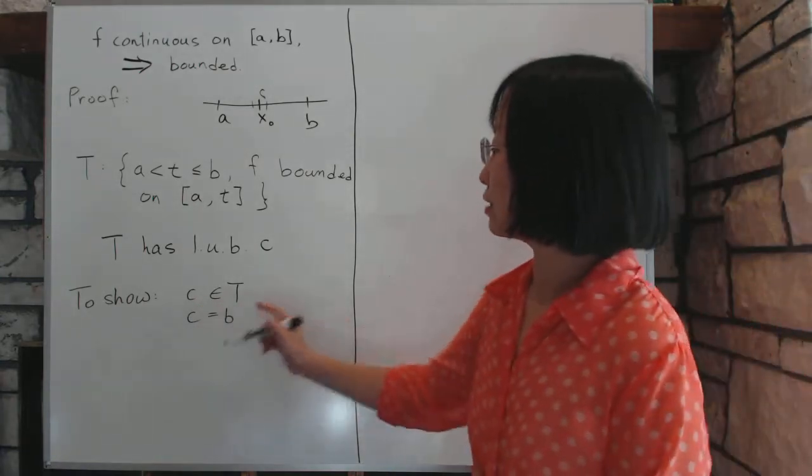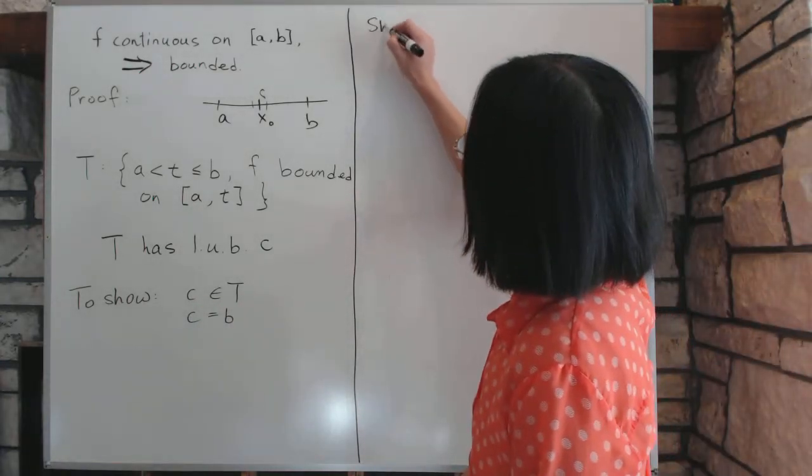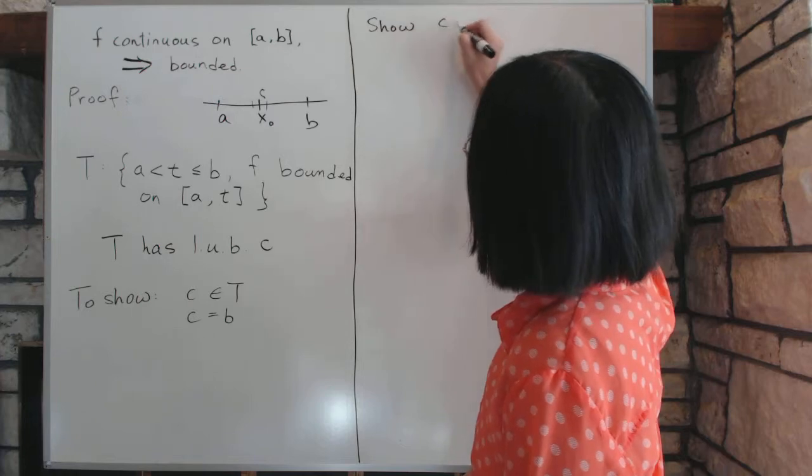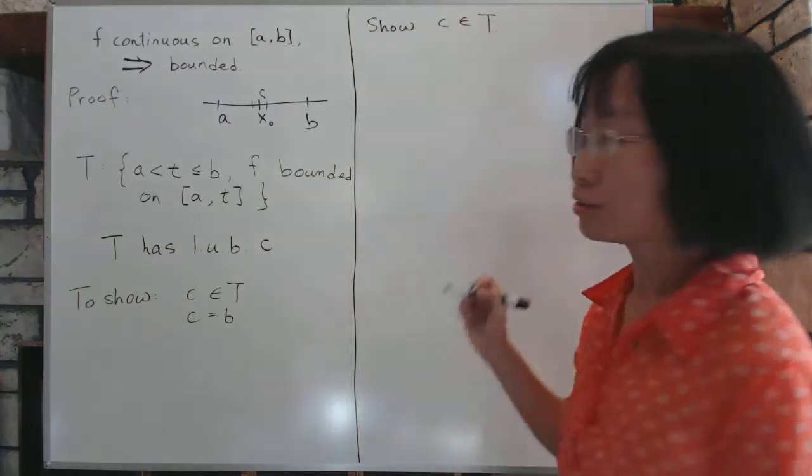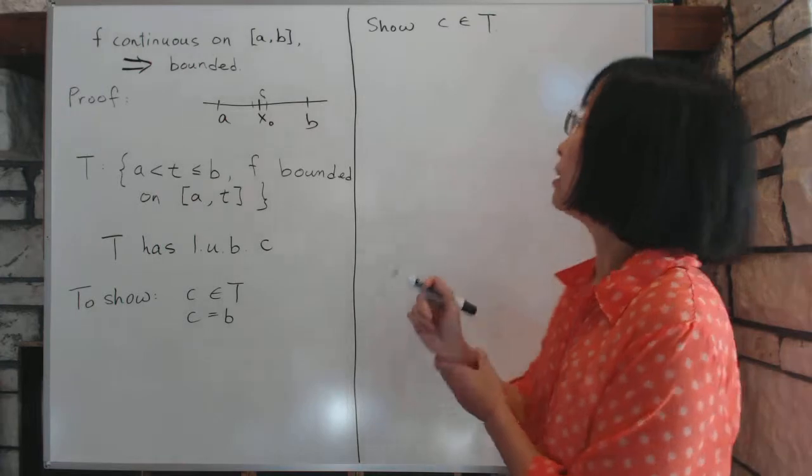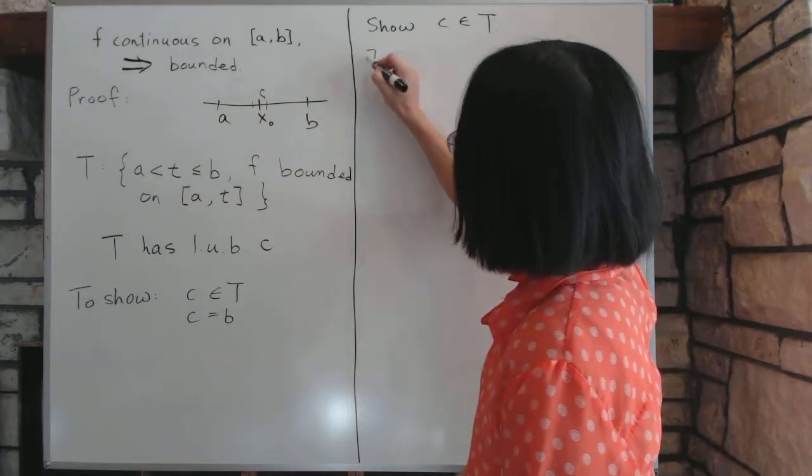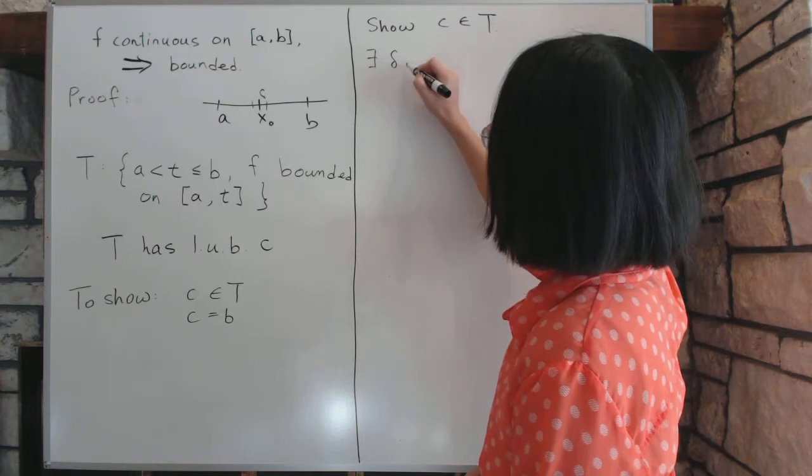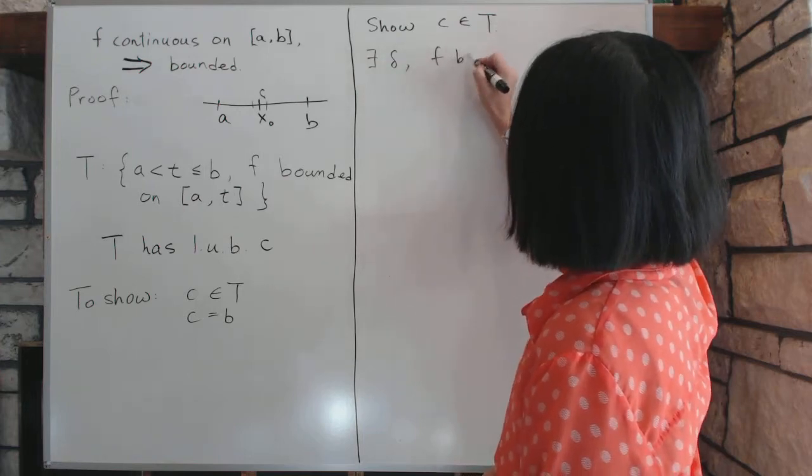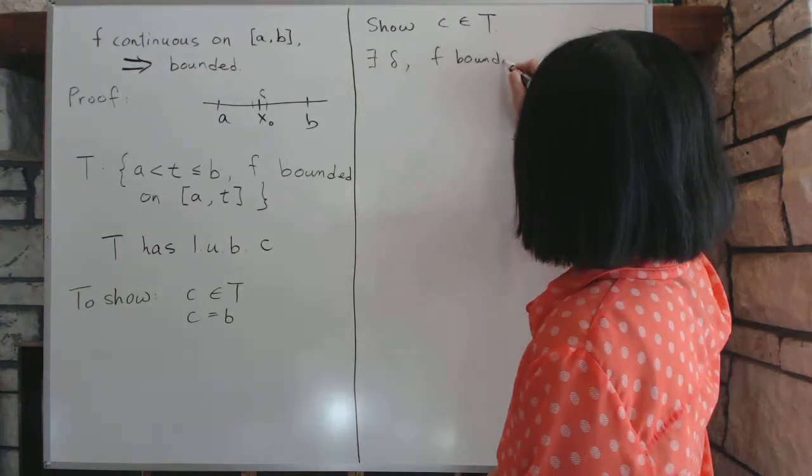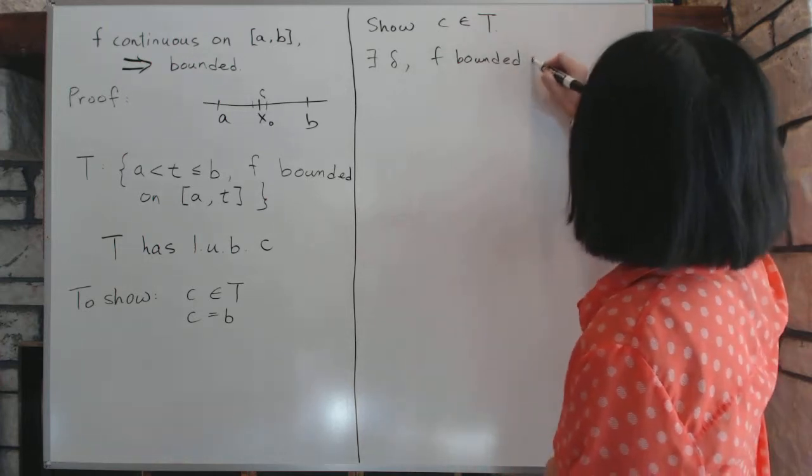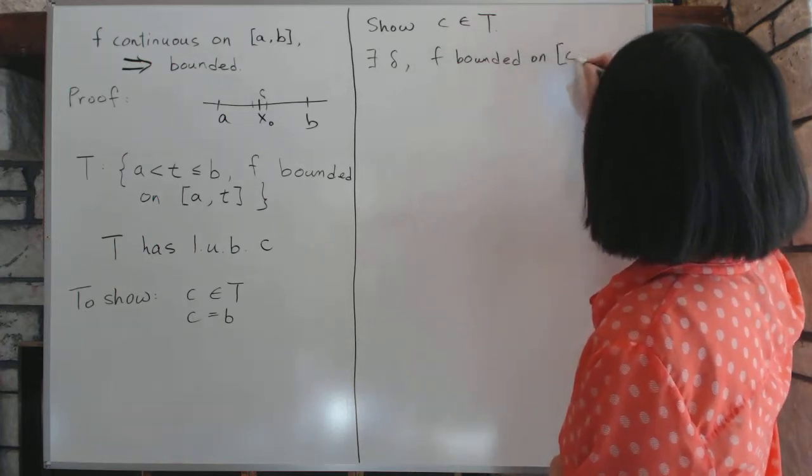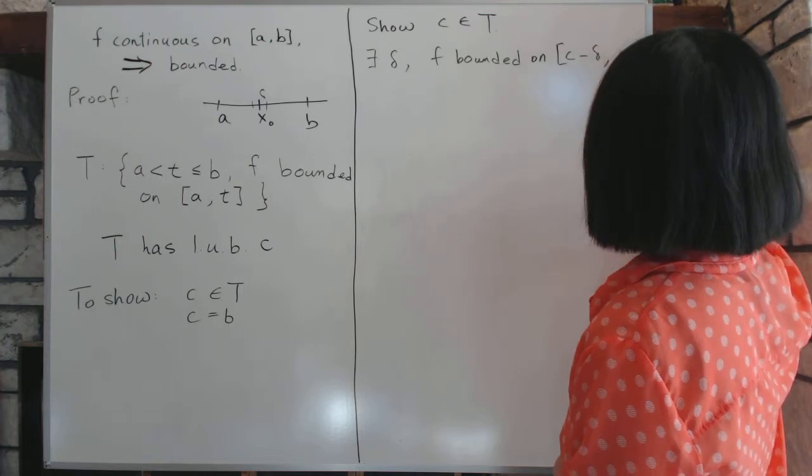Now, to show that C is an element of T, what we do is use principles 1 and 2 again. Principle 1 says there exists a delta, a little positive number, such that F is bounded on C minus delta to C.